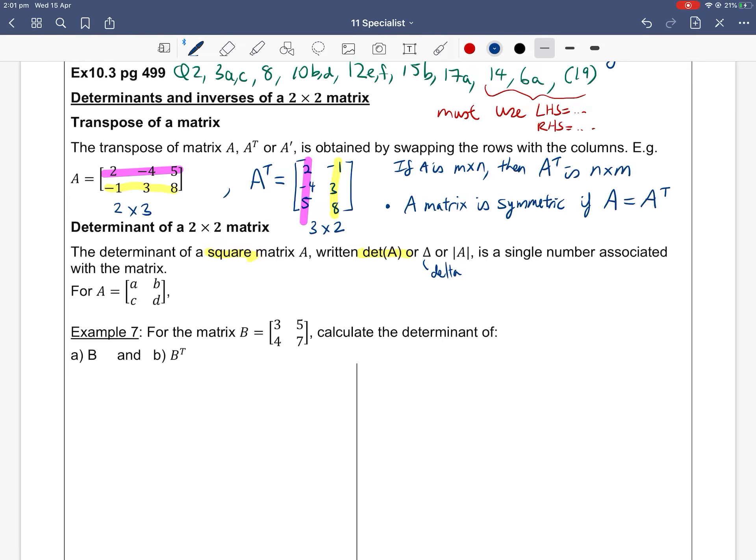It is a number, it's a single number, it's a value associated with the matrix. So what that means is if your matrix is a 2×2 with elements a, b, c, d, then the determinant of A is written as the straight lines |a b; c d| of your matrix.